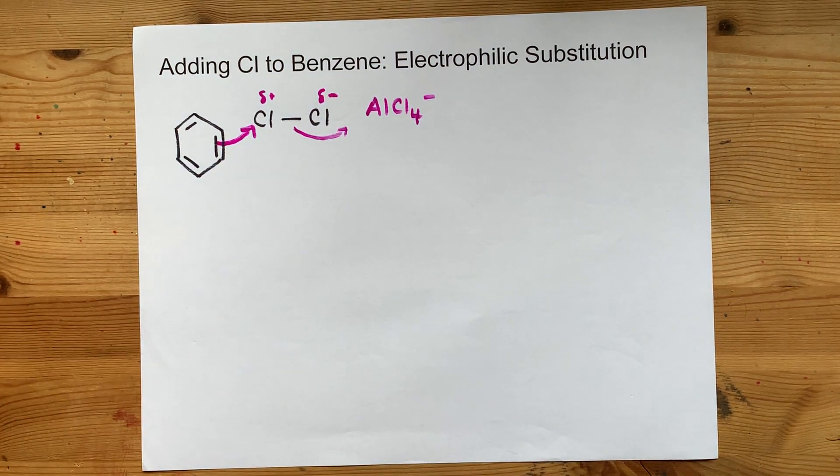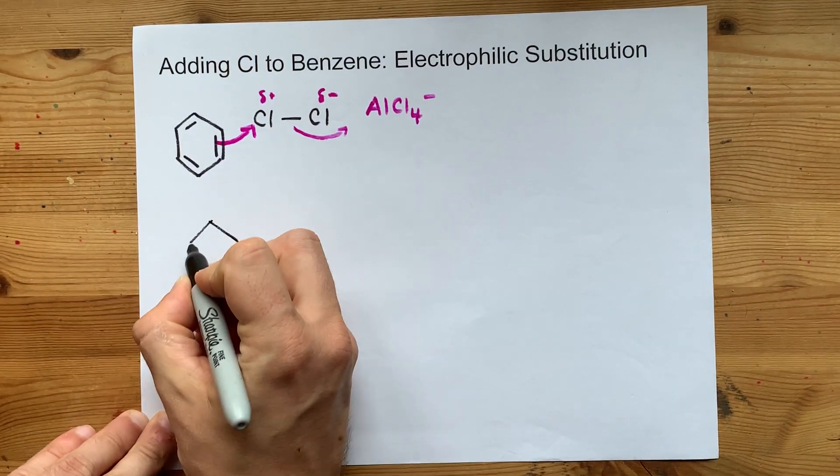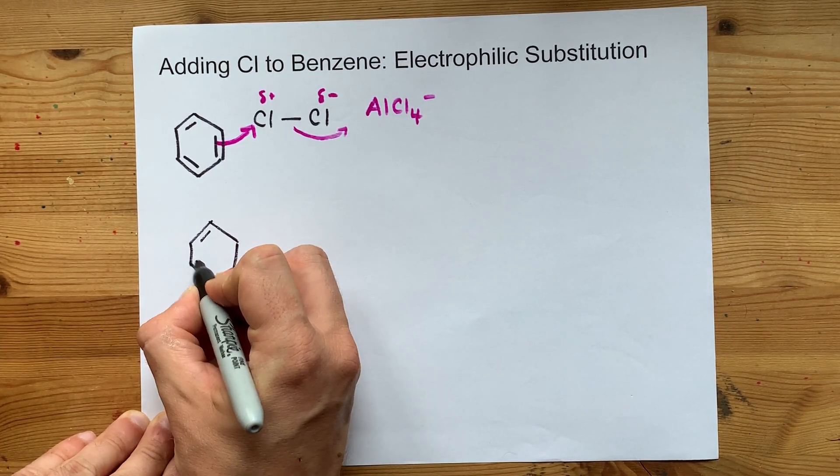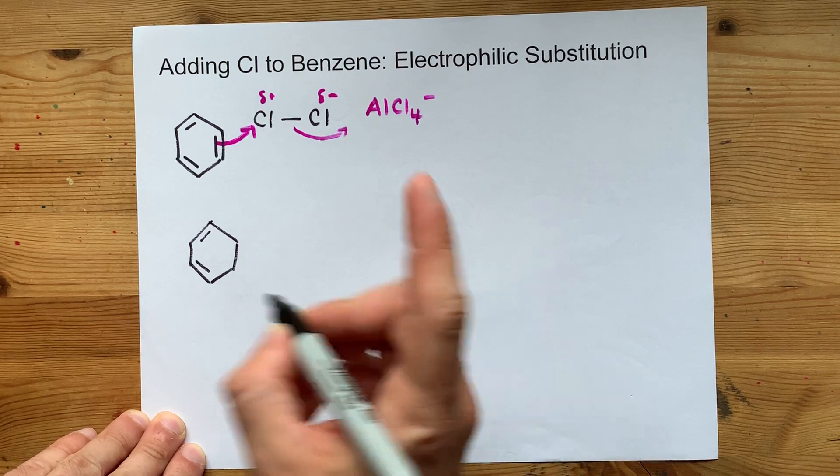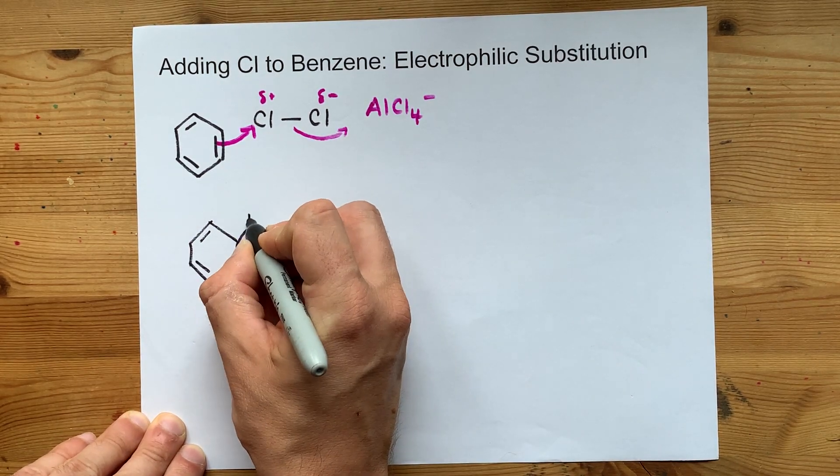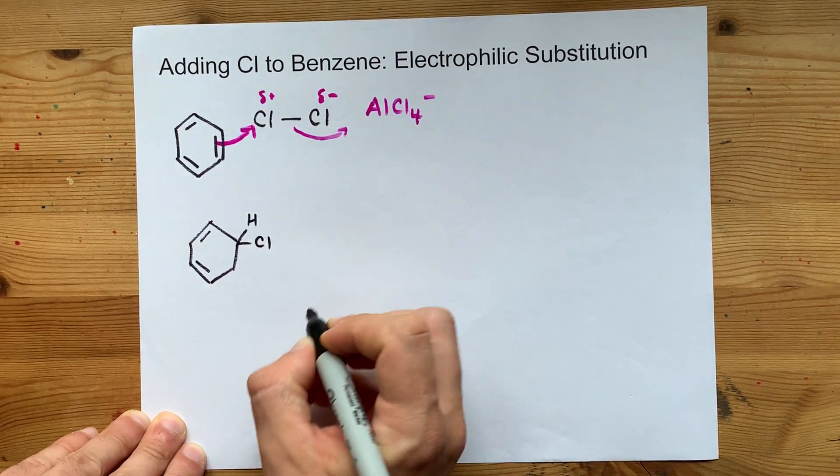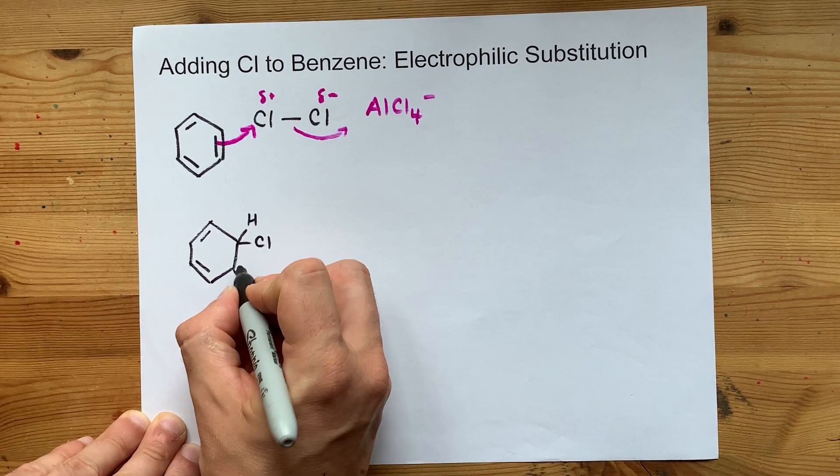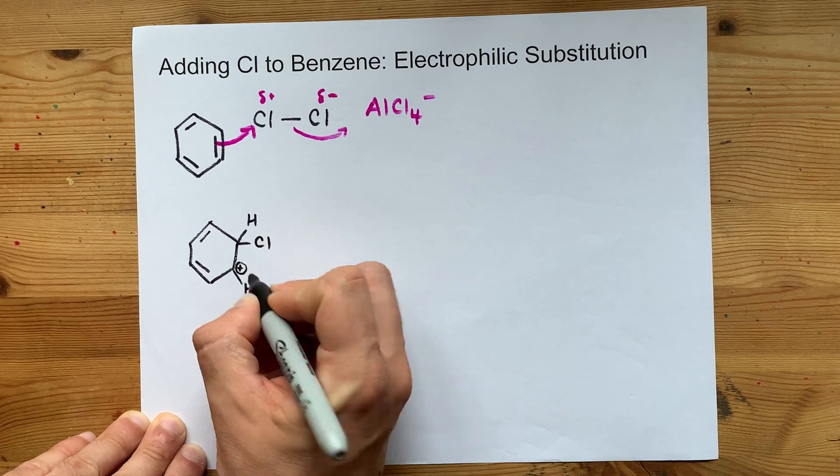That gives you the same six-carbon ring along with two double bonds intact, but one of the carbons has an extra chlorine on it. The other carbon is missing its extra bond. That makes it a carbocation, a plus charge.